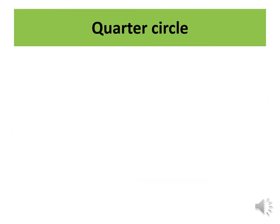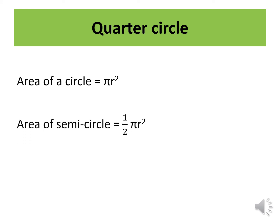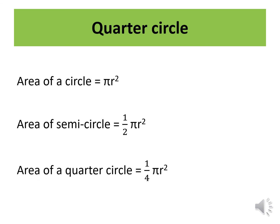Next: quarter circle. If a quarter circle is given, how do we find its area? The area of a circle is pi r square, and the area of a semicircle is half pi r square. Can you guess the area of a quarter circle? Quarter means 1 over 4 — exactly! So the area of a quarter circle is 1 over 4 times pi r square.